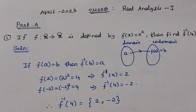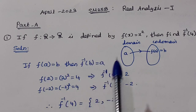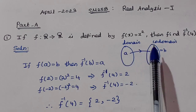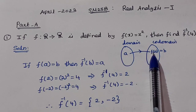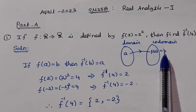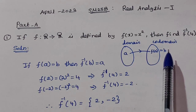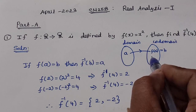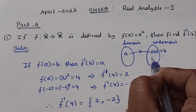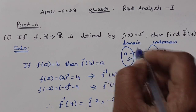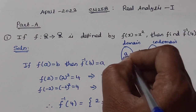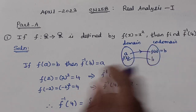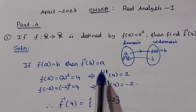First, let's understand image and inverse image. If A is in the domain and B is the codomain, then f⁻¹(B) gives us the set in the domain that maps to B. So f⁻¹(b) = a means f maps a to b.